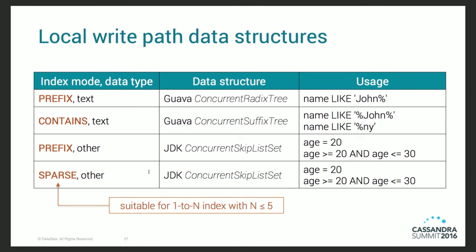In-memory: when your data is staying in memory in the mem table, SASI also creates the equivalent of an index mem table. For text data type with prefix mode, it uses a modified version of the Guava concurrent radix tree. For contains mode, it uses a concurrent suffix tree. For all other data types, it uses a modified version of the JDK concurrent skip list set. Be very careful with sparse mode — it is only suitable for a one-to-N index with a maximum of five. If you exceed five rows per index value, you will get an exception in your logs and it will stop indexing that row.